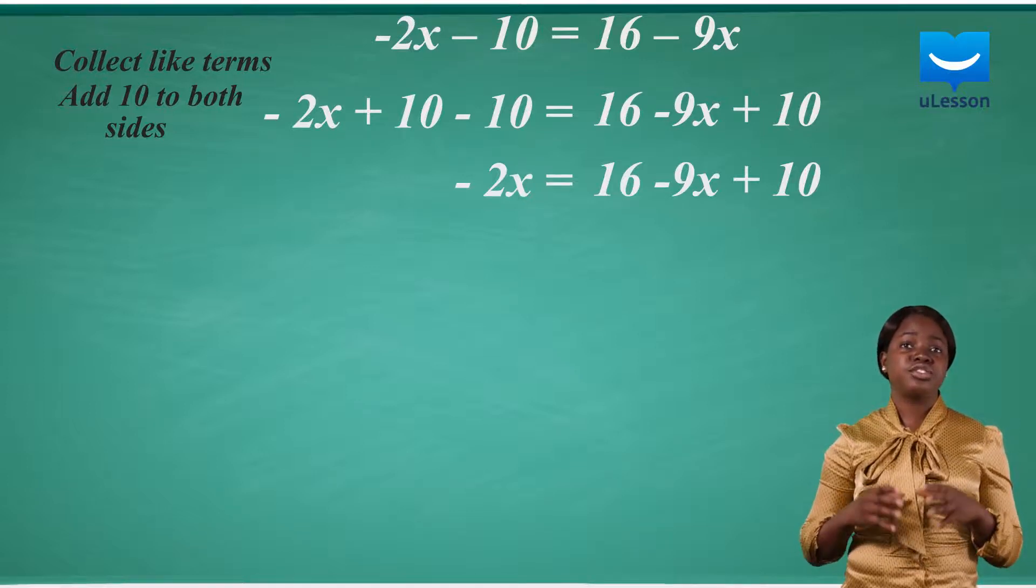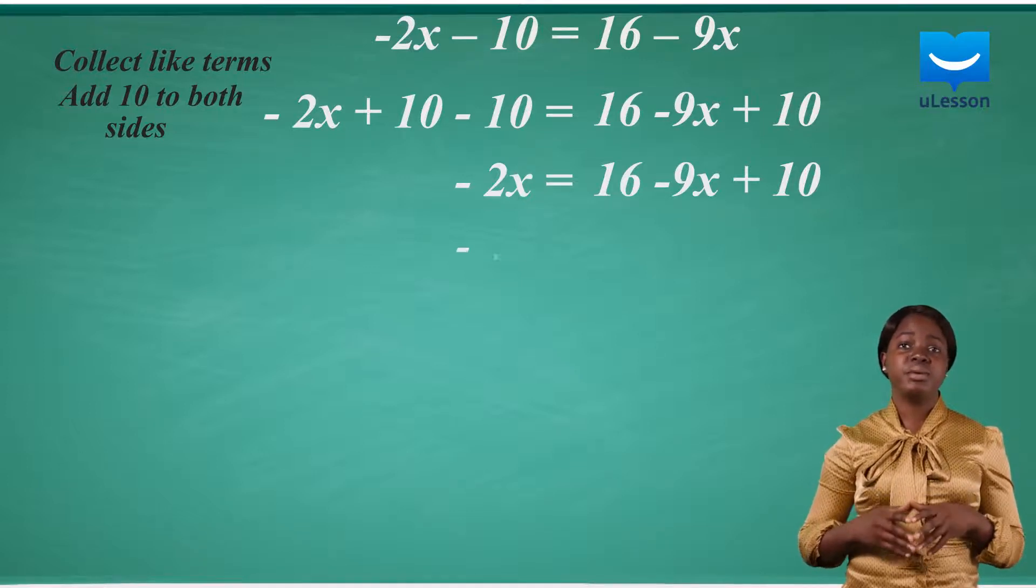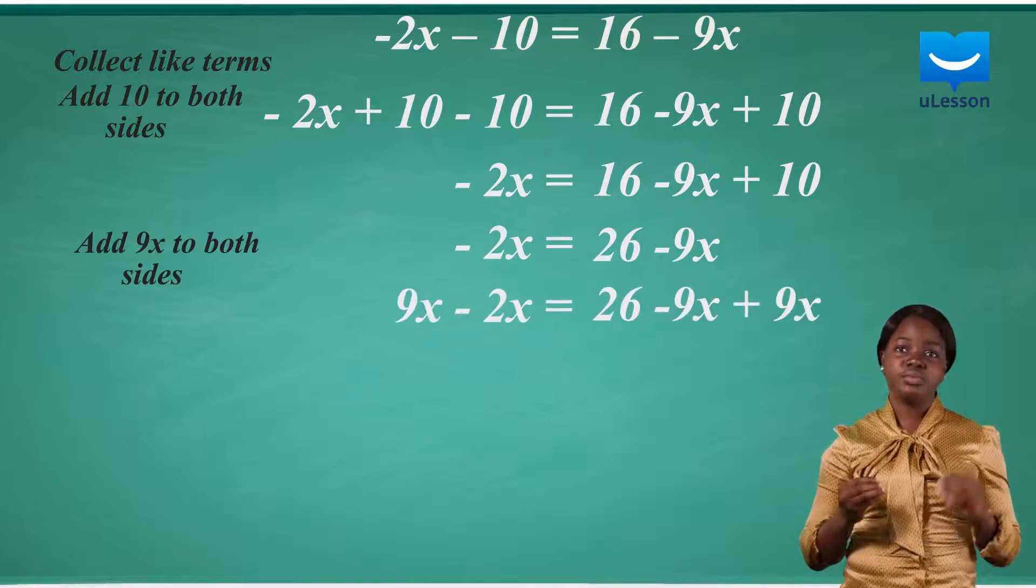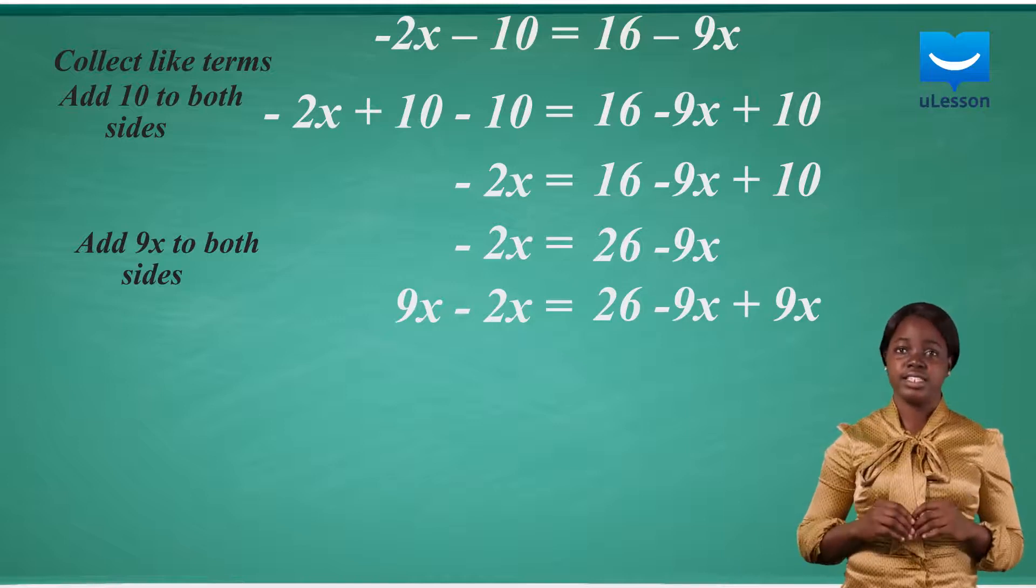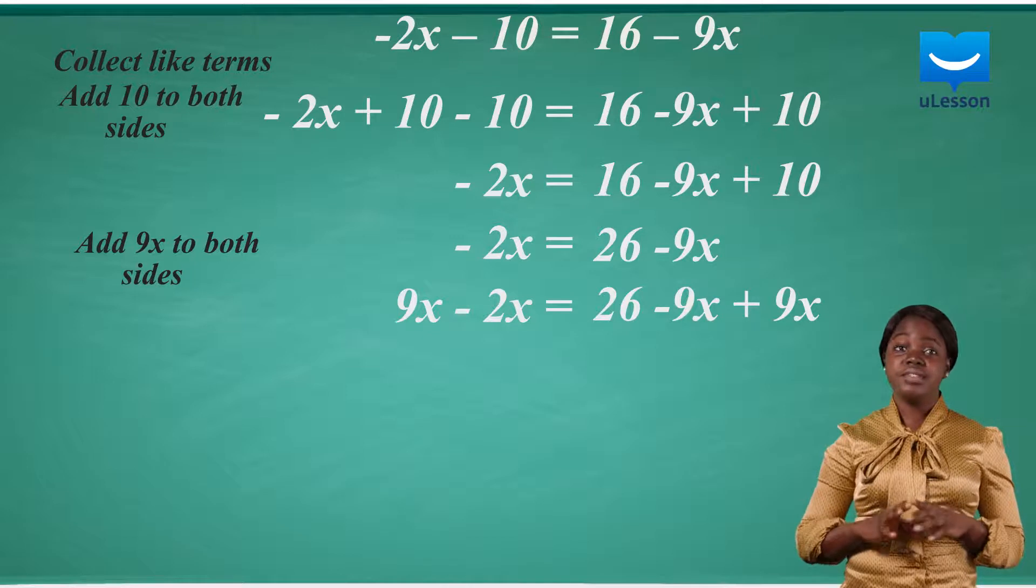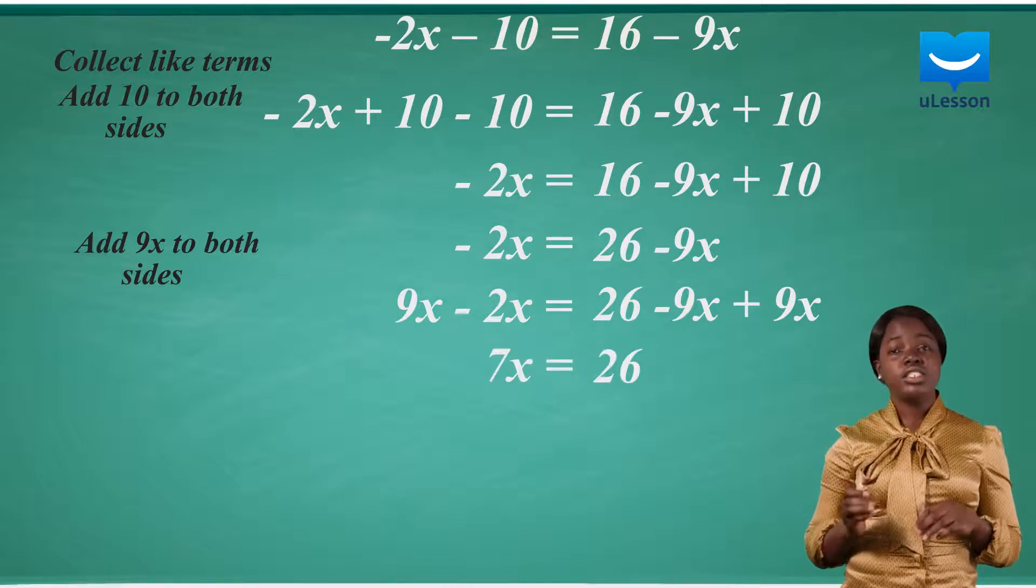Rearranging the terms and solving further, the equation becomes minus 2x equals 26 minus 9x. Next, we add 9x to both sides to eliminate minus 9x from the right hand side. And then solve further. This gives 7x equals 26.